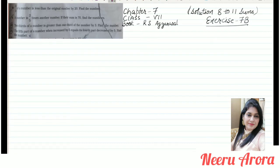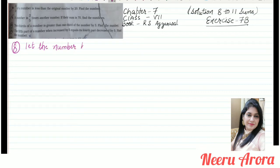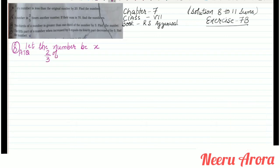Look at question number 8: 2/3 of a number is less than the original number by 20. Find the number. So let the number be x. Now according to the question, 2/3 of a number is less than the original number by 20.